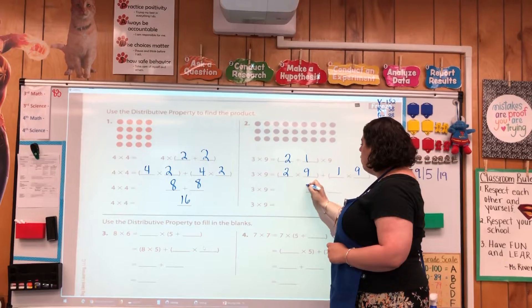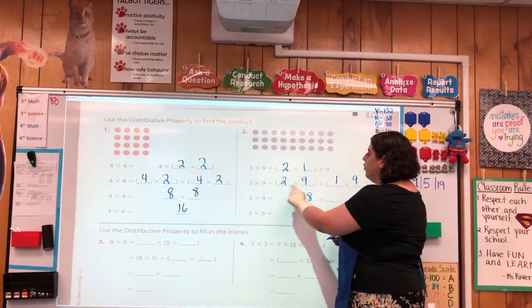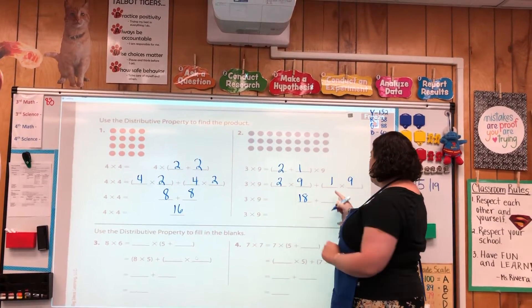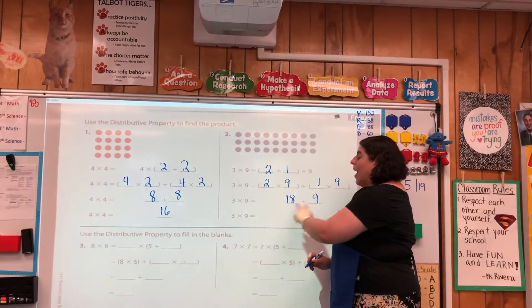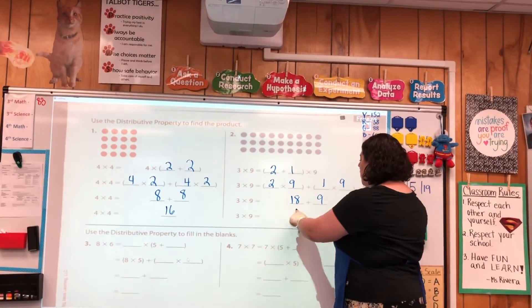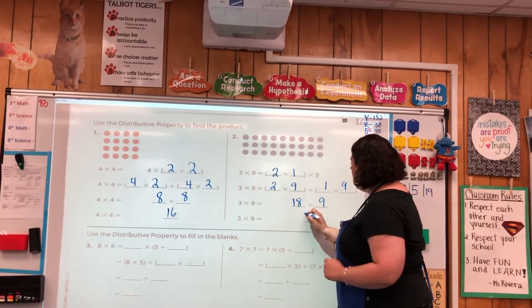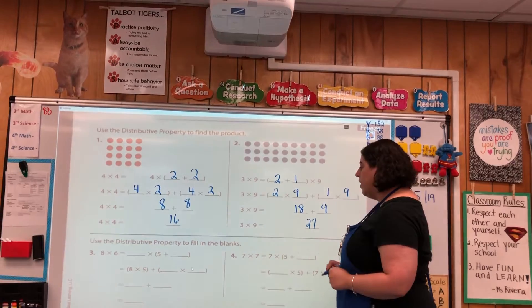Once again I multiply and put it in the blank beneath it. 2 times 9 is 18, and 1 times 9 is 9. The last step is to add: 18 plus 9, that would be 27.